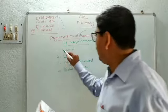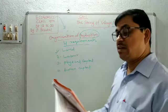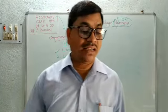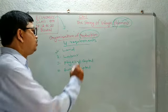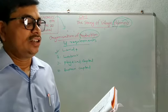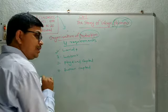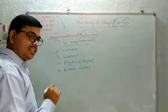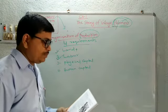The first requirement is land and other natural resources, such as water, air, and minerals. Even if we have land, air, water, and minerals, it is not sufficient to produce — so we need another factor, that is labor, which is the most important part.